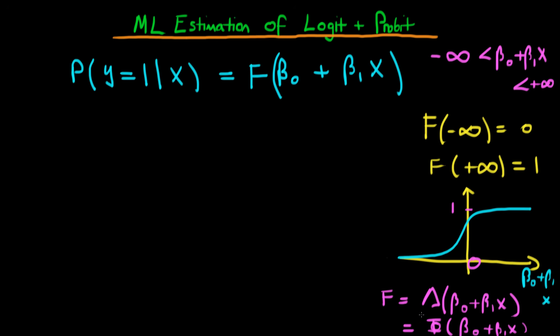The case where we have lambda — in terms of exponents — is the logit model, and when we have capital phi as in the bottom one, we're talking about the probit model. For all intents and purposes, the way in which we actually go about estimating these two types of model is exactly the same, so we can speak about them both in one video.